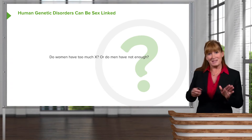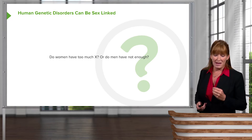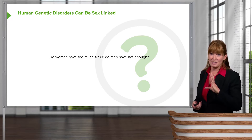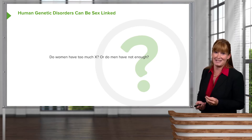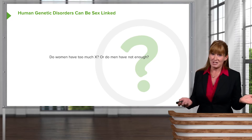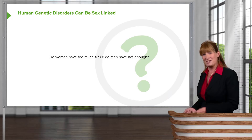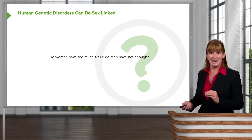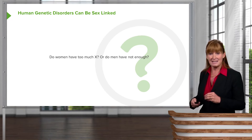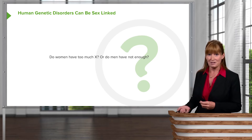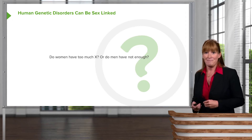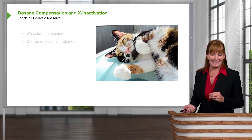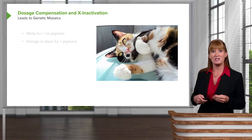So we're dealing with this X-Y sex-linked business. We know that the Y chromosome is tiny and the X chromosome is much larger and contains a lot more information. Do women just have too much stuff on the X chromosome, or do men just not have enough? In truth, there is a dosage compensation that takes place in order for us to have an equal amount of information, and the differences could explain some of the changes we see between males and females. The calico cat is a great example of a genetic mosaic, which is what results from dosage compensation.